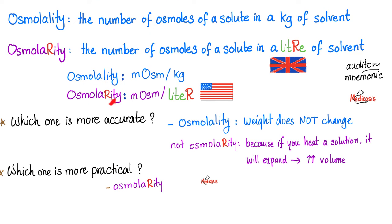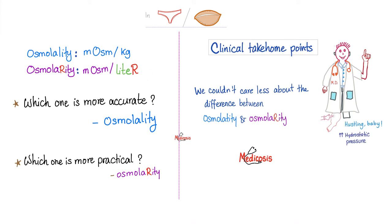What's the difference between osmolality and osmolarity? It's a technical difference that clinically doesn't matter at all. Osmolality is per kilogram; osmolarity is per liter. Which one is more accurate? Osmolality. Which one is more practical? Osmolarity, because it's easier to get a one-liter sample than one kilogram. Clinically, it doesn't matter much because blood and urine are mostly water, and the density of water is one — one liter of water weighs one kilogram.